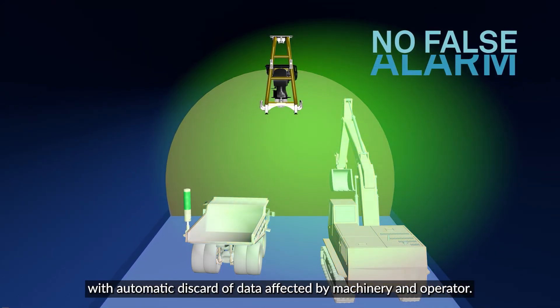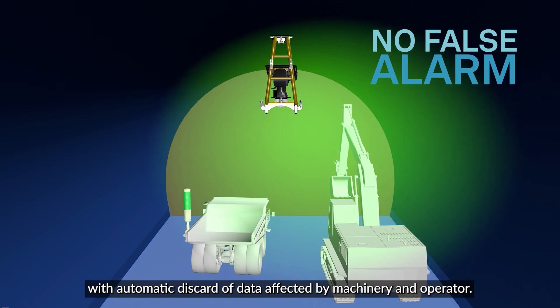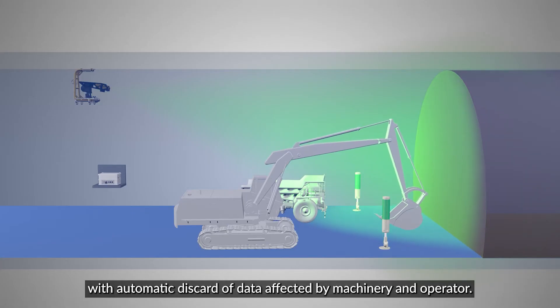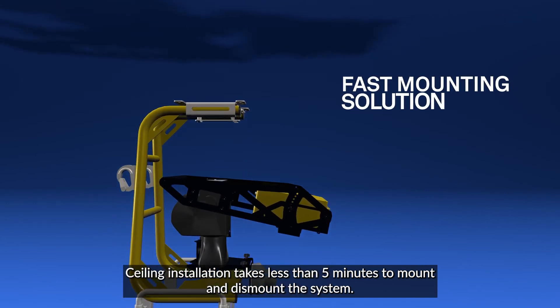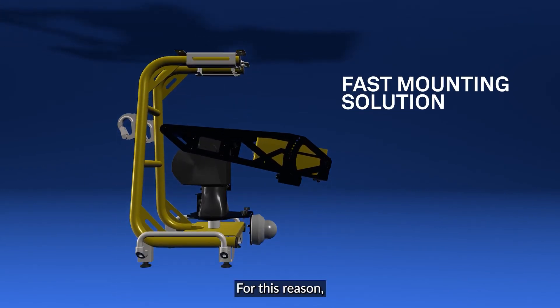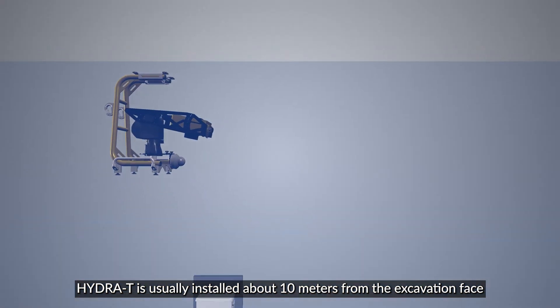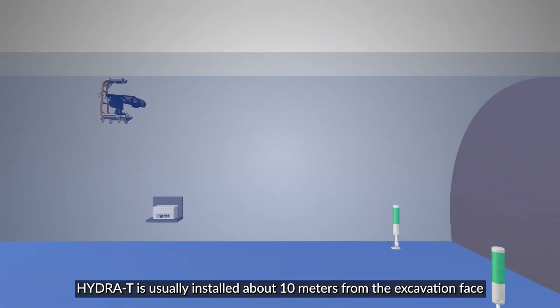With automatic discard of data affected by machinery and operators, installation takes less than five minutes to mount and dismount the system. For this reason, Hydra T is usually installed about 10 meters from the excavation face.